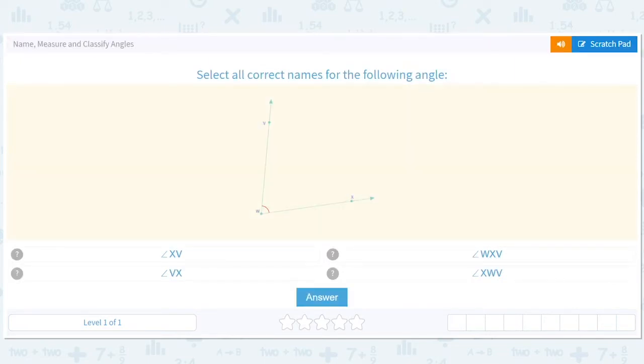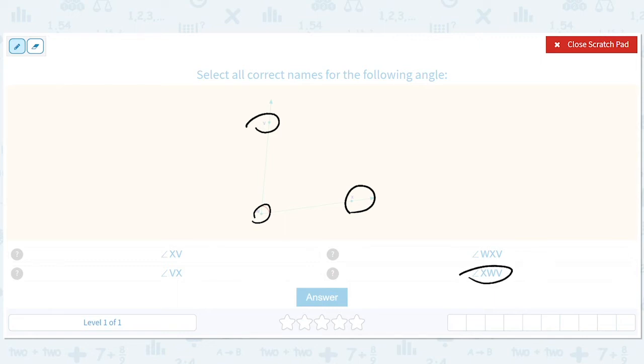So we're going to name, select all correct names for the following angle. Basically what we need is a point on one side of the angle, a point on the angle, and then another point. It doesn't really matter what order we do. We could do x, w, v, or we could do v, w, x.